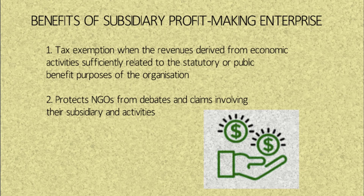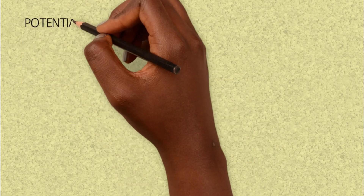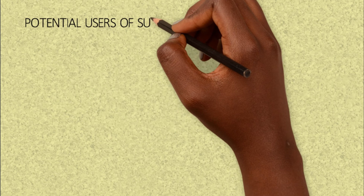It also protects non-governmental organizations from debates and claims involving their subsidiary and activities, because clearly this is an entity that generates income. It is clearly accountable — you generate the income, its accounts are audited and they are transparent. However, you use the profits to plow it back into the operations of the civil society organization.